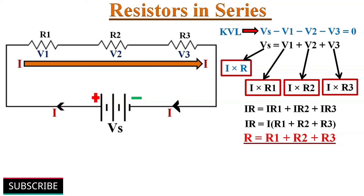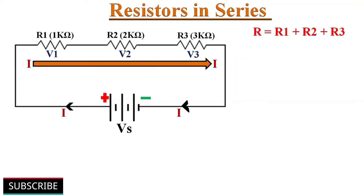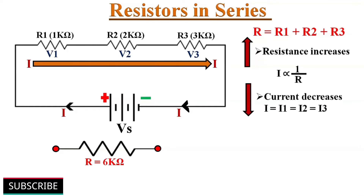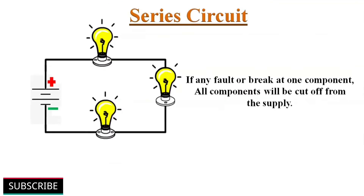Hence, if two or more resistors are connected in series, the overall resistance R equals the sum of the individual resistances. For example, if three resistors of 1 kΩ, 2 kΩ, and 3 kΩ are connected in series, the overall resistance equals 6 kΩ. From this we understand that connecting resistors in series increases the overall resistance, and since current is inversely proportional to resistance, the current will decrease. The current is the same at every point, and the applied voltage Vs equals the sum of all voltage drops. The main disadvantage of a series circuit is that if one component breaks down, the entire circuit is cut off from the supply.